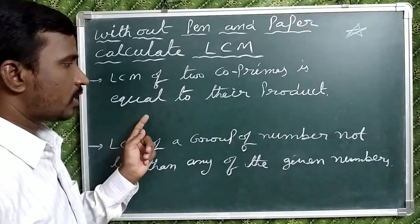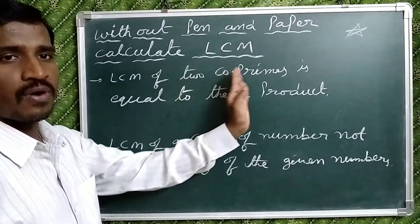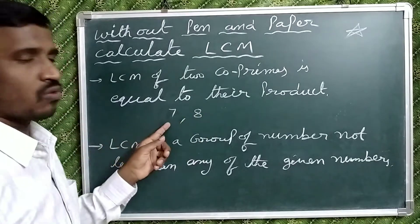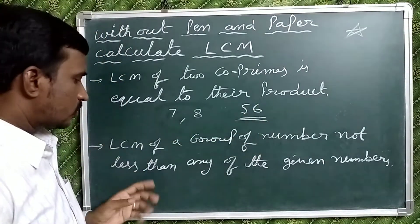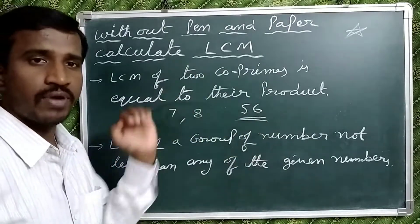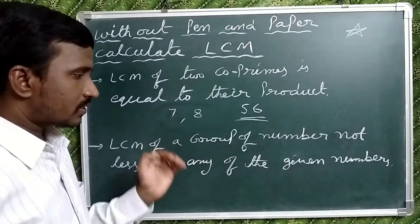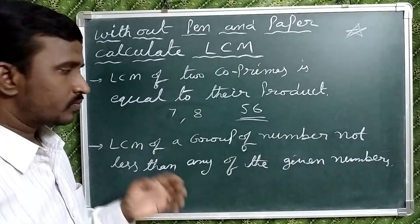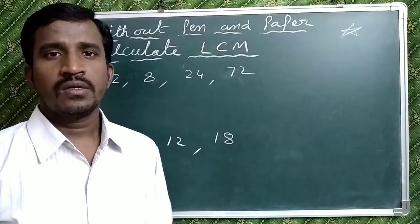The LCM of co-primes will be the product of their numbers. Co-primes means if two or more numbers have no common factors except one, that type of numbers are called co-primes. For example, 7 and 8 are co-primes, so the LCM of these two numbers will be 56. Also, the LCM of a group of numbers is always greater than or equal to the given numbers — it is never less. So here the LCM of 7 and 8 is 56, which is more than both 7 and 8.